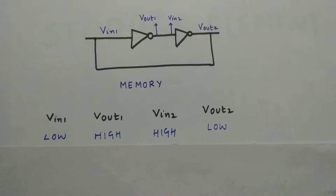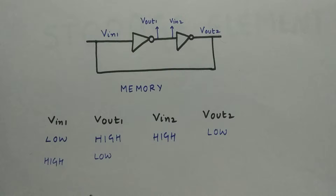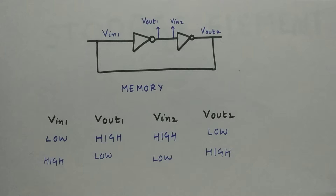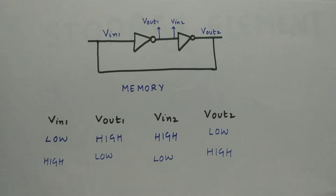Now let's say VIN1 is high. What will be VOUT2? VOUT2 will be low, and VIN2 will also be low. After passing through the second inverter we will get high once again. By this analysis, you can see that whatever value we give to the circuit, it will stay forever until we disturb it externally.